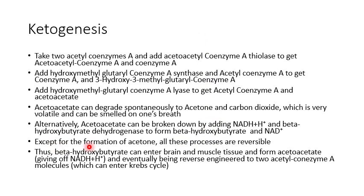Beta-hydroxybutyrate can enter the brain and muscle tissue. It can then be broken down into acetoacetate through the dehydrogenase molecule, which gives off NADH plus H+ that can immediately be utilized for energy, and it can eventually be reverse-engineered into two acetyl coenzyme A molecules which can enter the Krebs cycle, provided enough oxaloacetate is present.